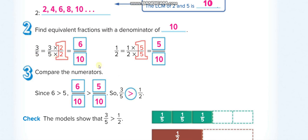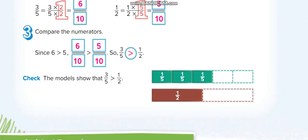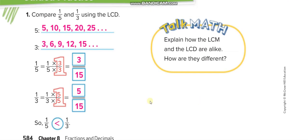In the next example, we find the LCM of 5 and 3, which is 15. We multiply 5 by 3 to get 15, so we multiply the first fraction by 3. And we multiply 3 by 5 to get 15, so we multiply the second fraction by 5, giving us 3 over 15 and 5 over 15. Of course 5 over 15 is greater.